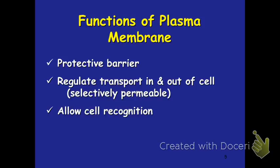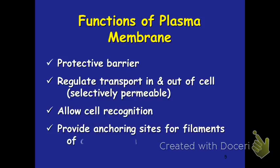First, the cell membrane serves as a protective barrier from the outside environment. Second, it's able to regulate transport in and out of the cell — in other words, what's able to move in and out. The term selectively permeable, or semi-permeable, is what we use to describe this type of cell membrane.